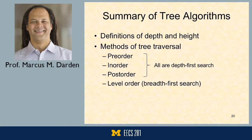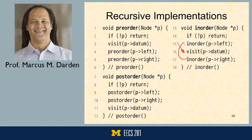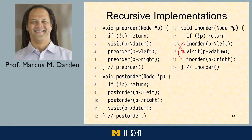In-order traversal of a binary search tree gives us data in order. In a BST, the left child is always less than the right, so if you do an in-order traversal you get a nice ordered set of data. Let's look at some summary examples of these traversals and do simple implementations to make sure we've got a good feel for it.